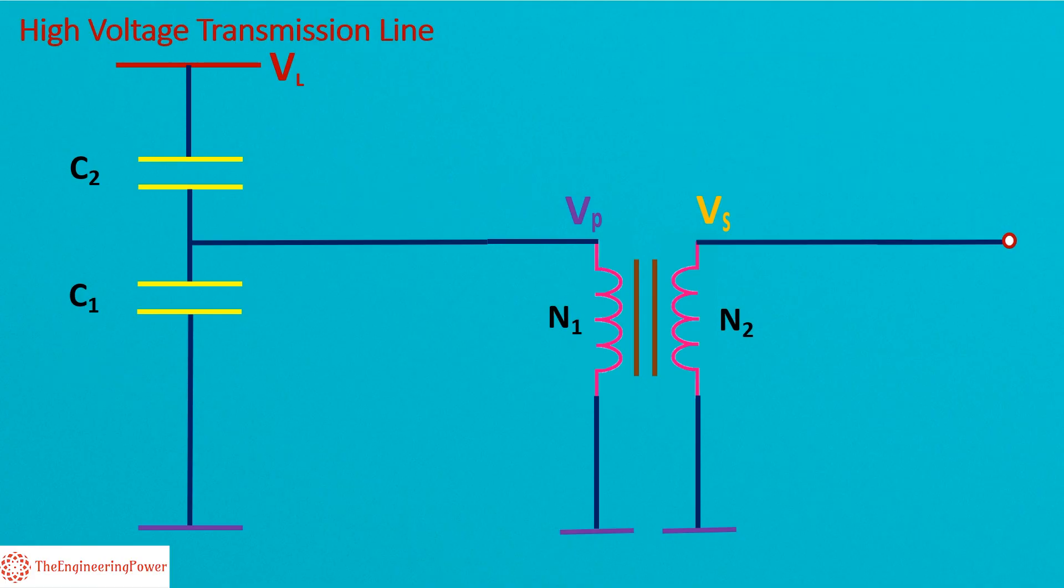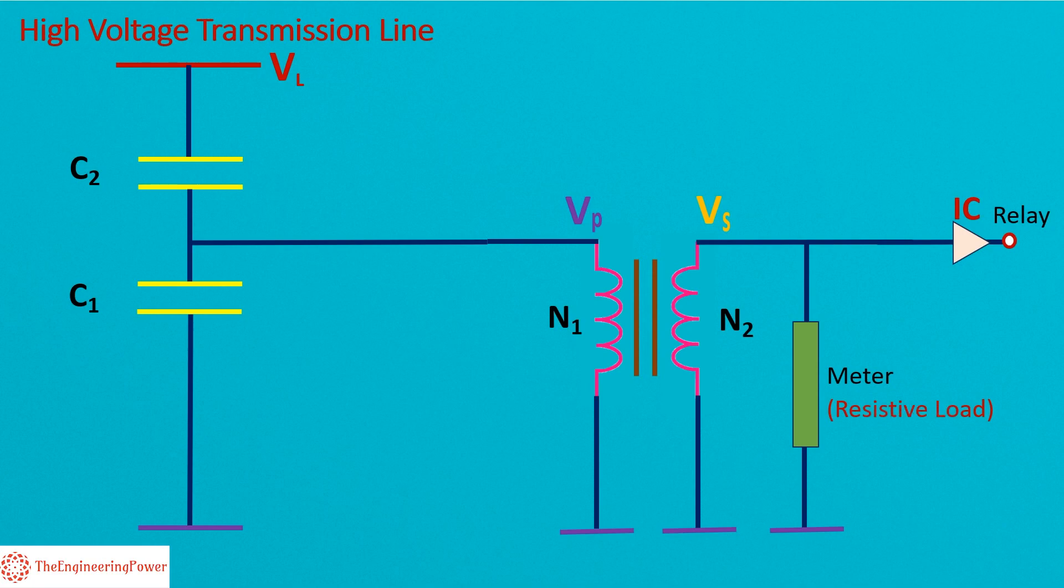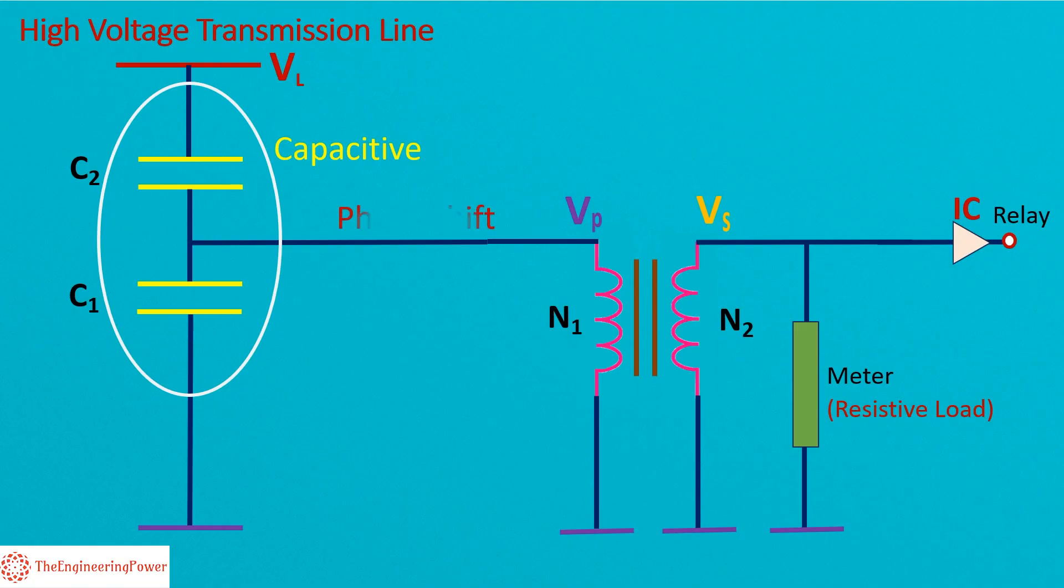The output voltage of the CVT, Vs, is either fed to a meter or relay. It's directly fed to the meter. However, for protection and control purposes, the voltage is first fed to an IC which is programmed according to the requirements, and output of this IC is then fed to relays. But here, meter will be a resistive load whereas the potential divider is capacitive. Therefore there will be a phase shift which will affect the output voltage. To solve this problem, an inductor is placed in series with the auxiliary transformer. This inductor with inductance L will compensate the effect of capacitive phase shift.